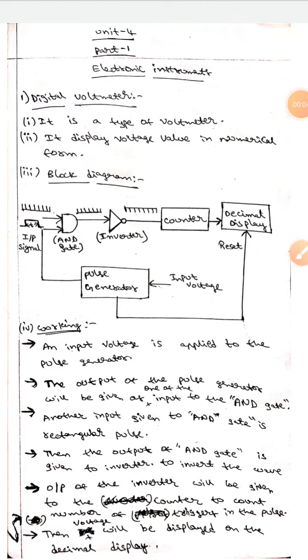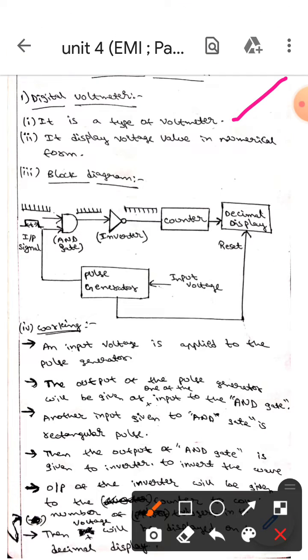Hello guys, I hope you are all fine. Today we are here to discuss the digital voltmeter. A digital voltmeter is a type of voltmeter that displays the voltage value in numerical form.